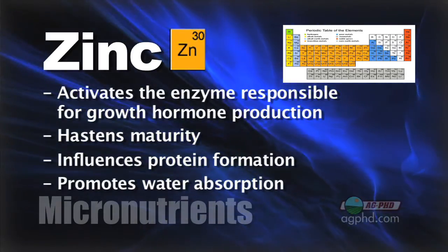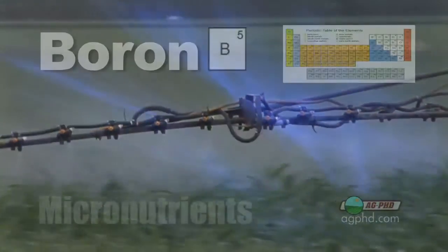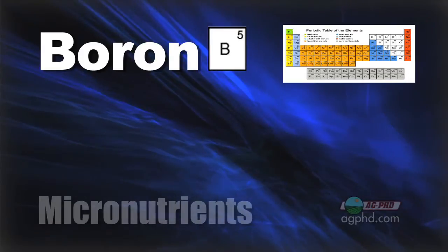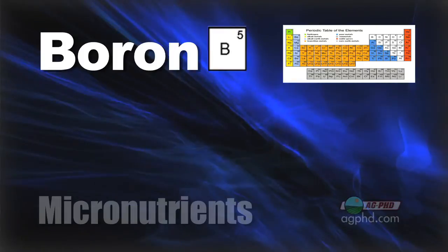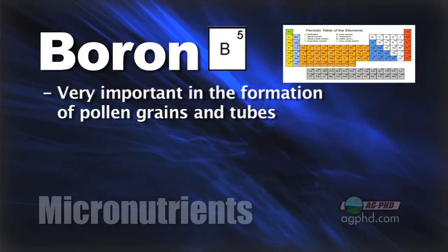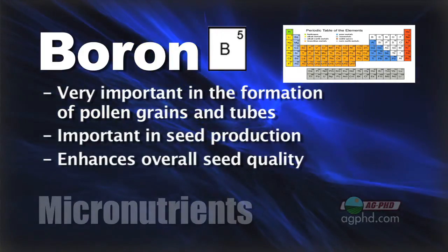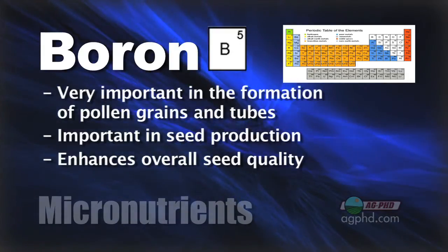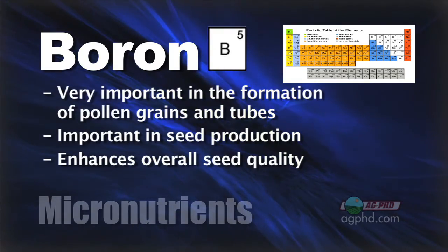Zinc is one of the nutrients that we've had some issues with on our own farm — we've had to keep supplementing, adding zinc all the time. Another nutrient we've had some issues with on our farm has been boron. When I think of boron, I think about many things along the reproductive stages of plants. Boron is very important in the formation of pollen grains and in the tubes. It's also important in seed production and enhances the quality of seed. To keep it simple, if you think about the reproductive phases and you're having any issues at all, boron is one of those nutrients that's important.